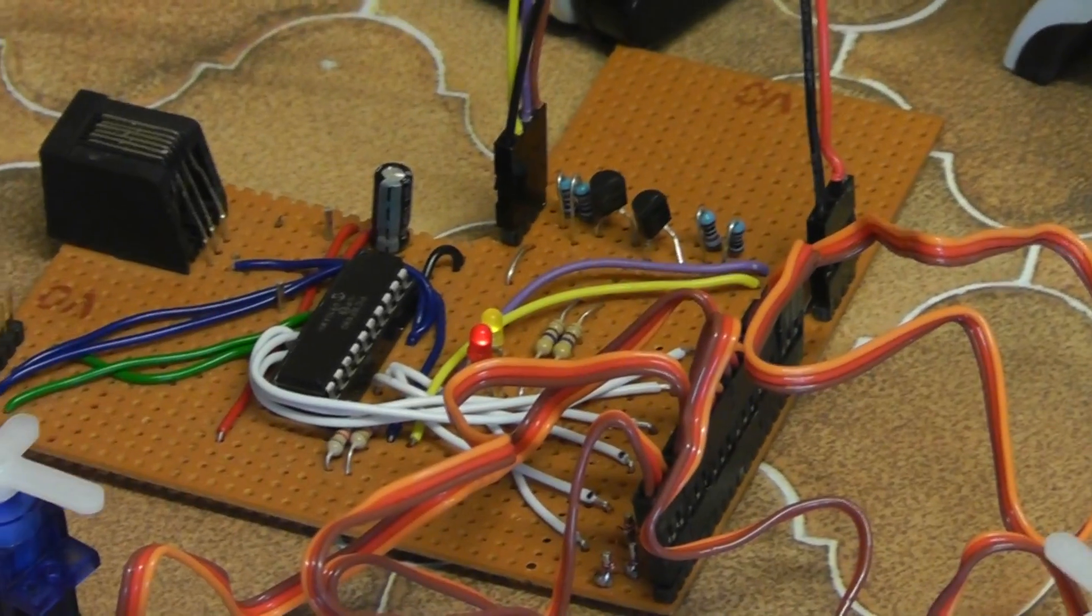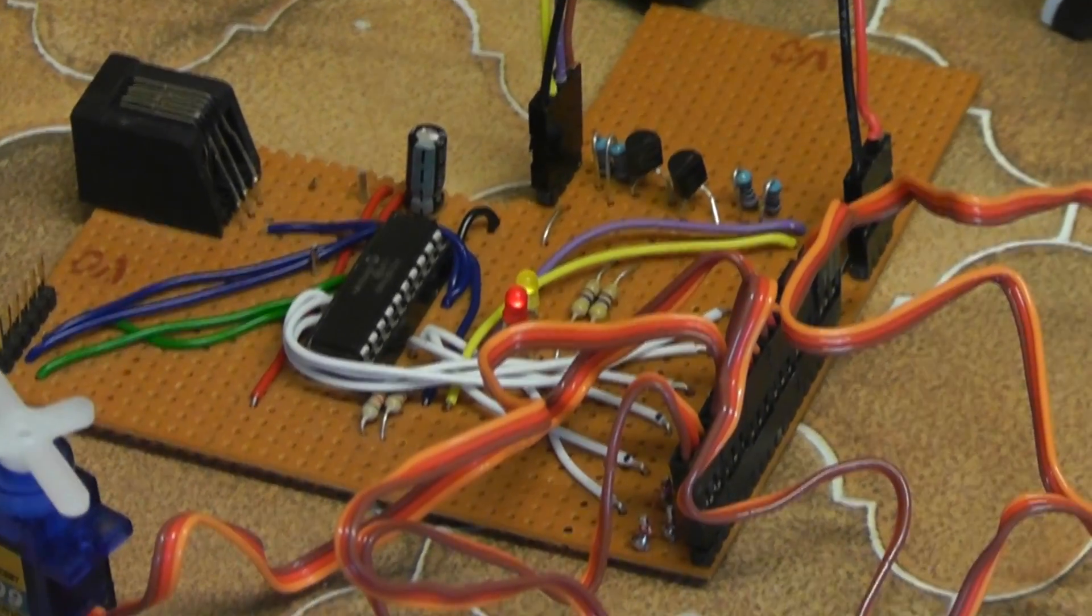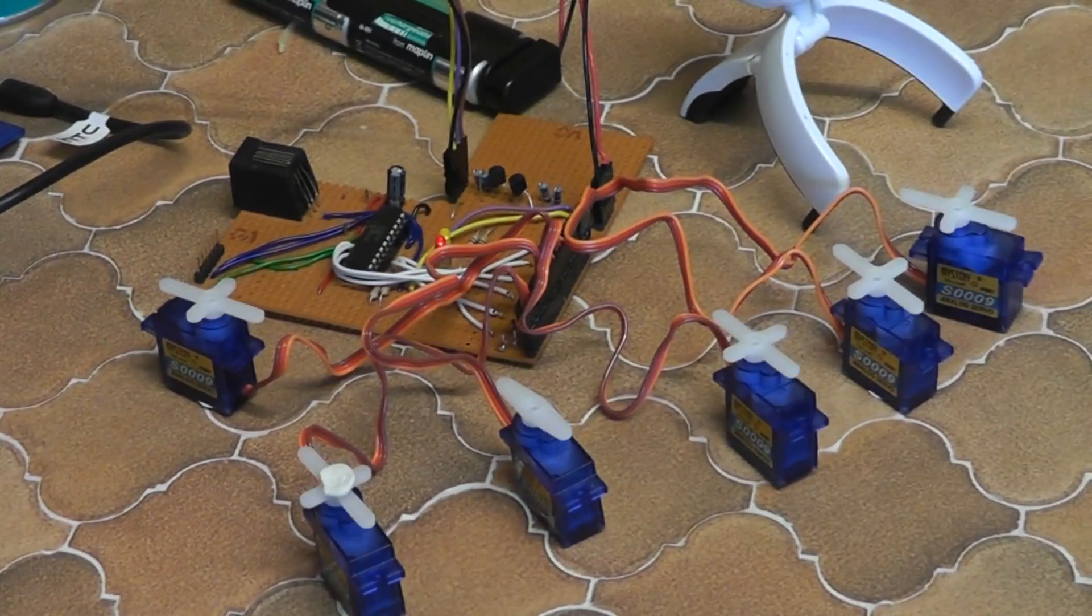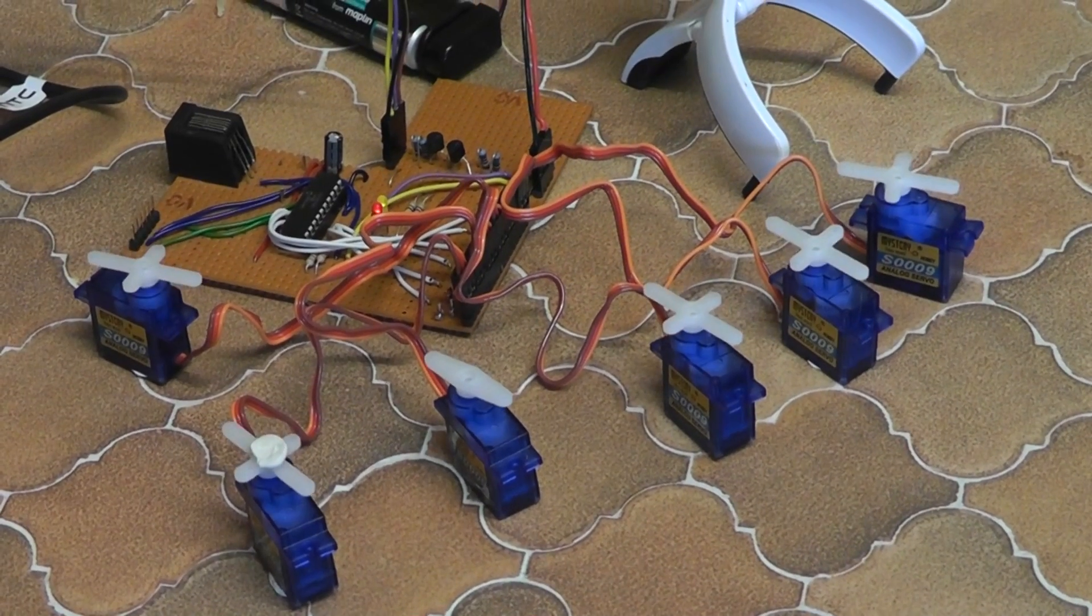It's called a PIC and what's happening is that the Raspberry Pi is sending commands to the PIC which is turning the commands into millisecond pulses that control the servos.